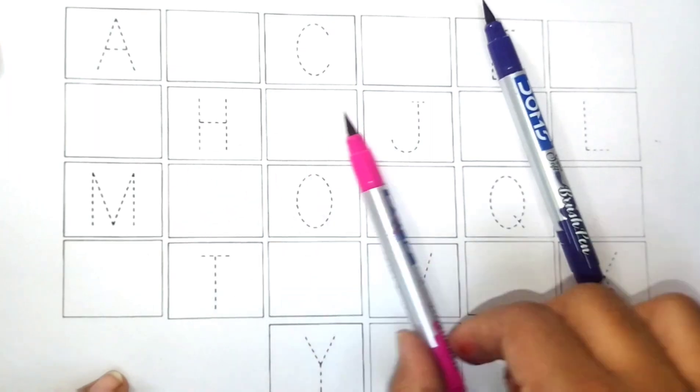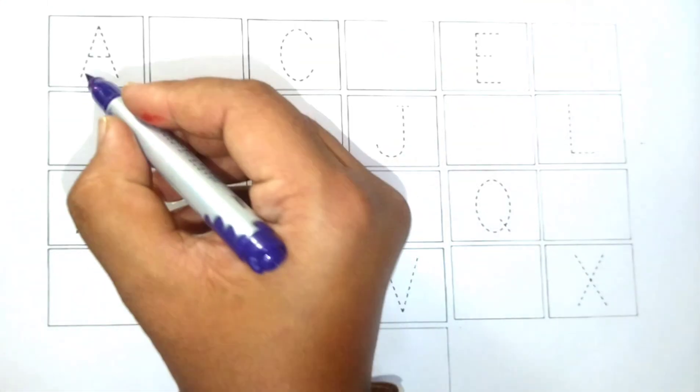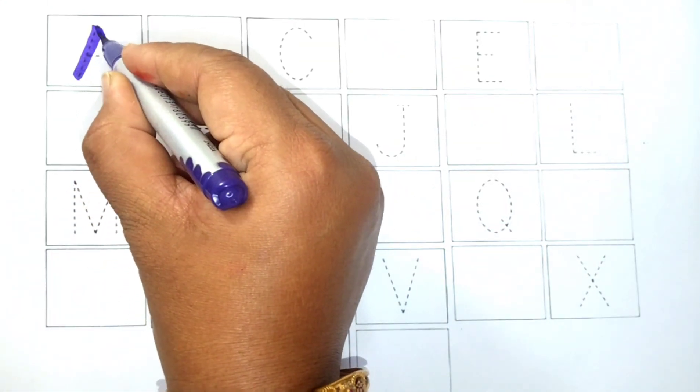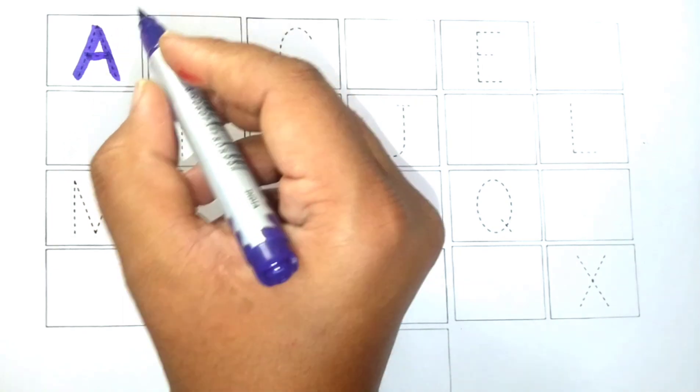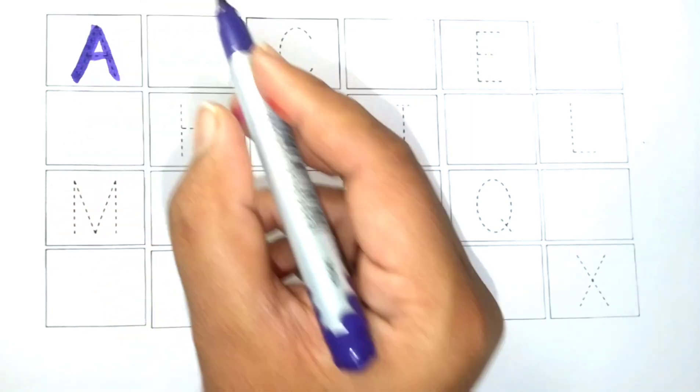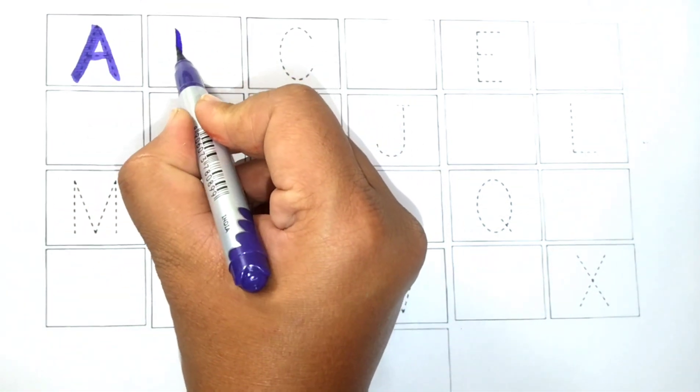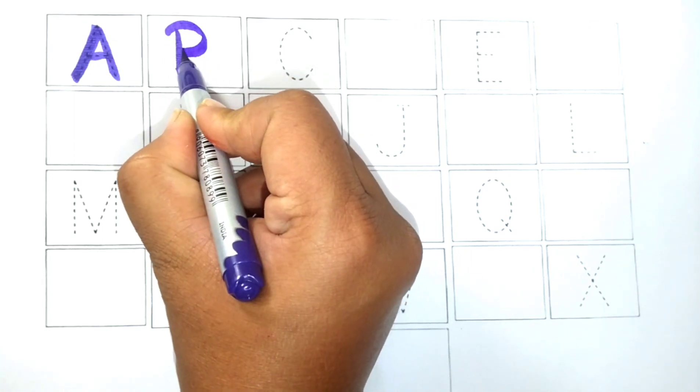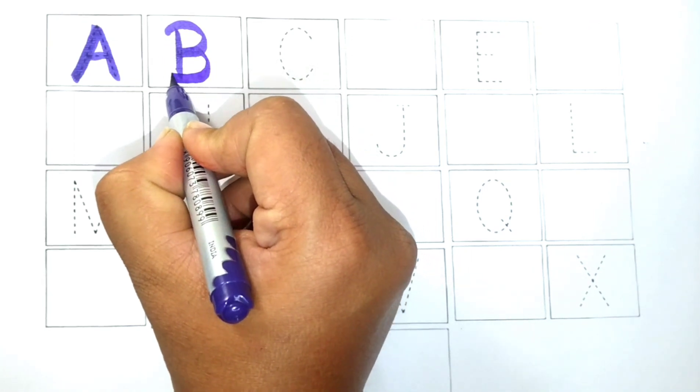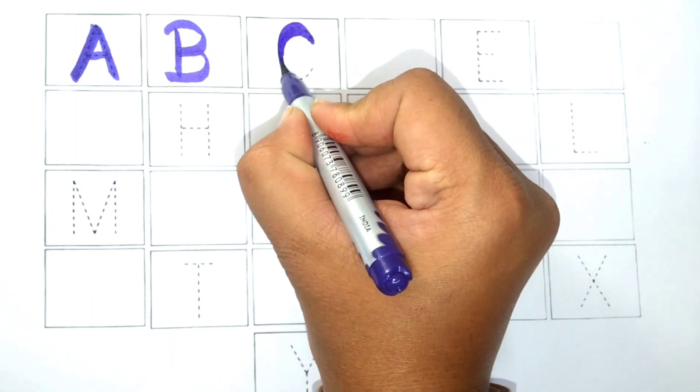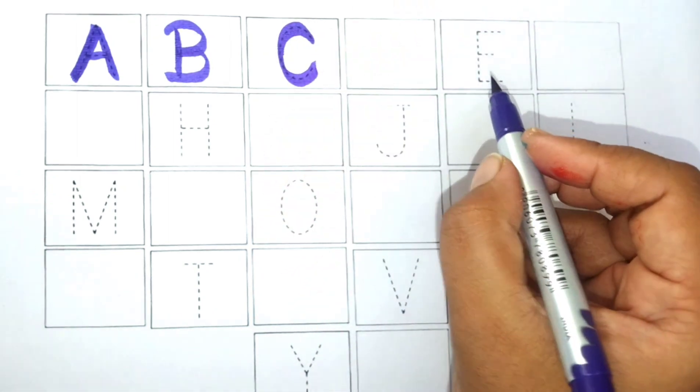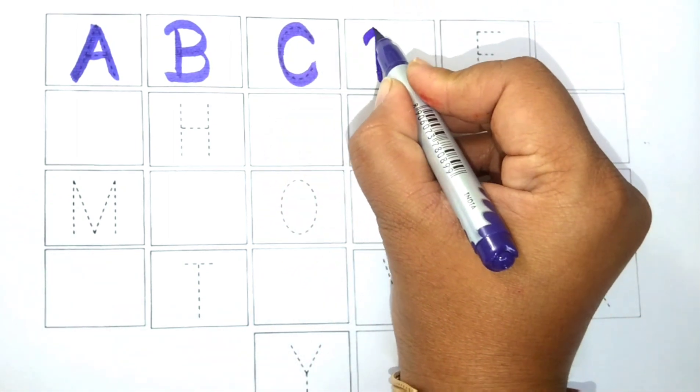Purple color, pink color, purple color. A, A for apple. B, B for banana. C, C for cat. D, D for dog.